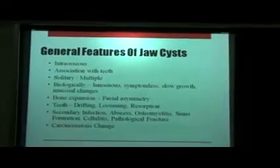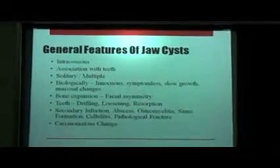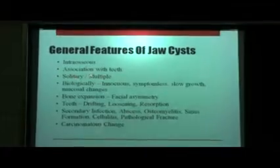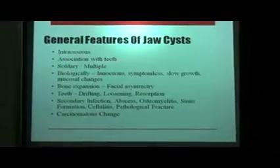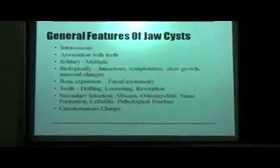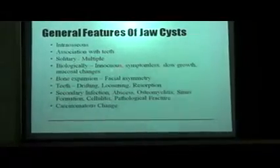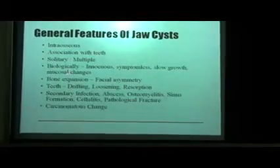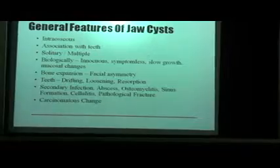Coming on to the general features of the jaw cysts. Most of the cysts which we are going to study in detail are intraosseous, except the ones which are present in the soft tissue of the head and neck region, such as fissural cysts. Some of them may be associated with teeth — for example, the dentigerous cyst arising from the reduced enamel epithelium, which can be associated with an impacted tooth. They can be present solitarily or in multiples. Biologically, they can be asymptomatic, symptomless, or show slow growth over time, or even mucosal changes if rapidly growing. If causing bone expansion, they will lead to gross facial asymmetry.